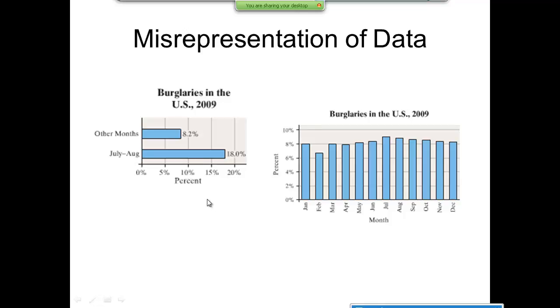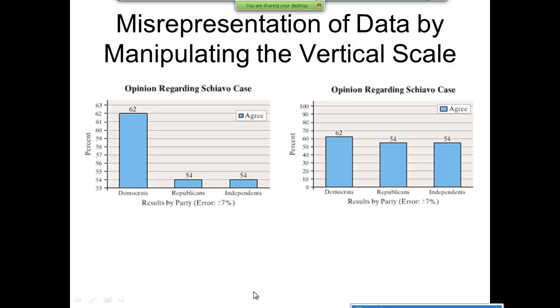On the left-hand side, this is an opinion regarding the Terry Schiavo case. You see Democrats 62%, Republicans 54%, and Independents 54%. It looks like the Democrats are way up there high, but actually the Republicans and Independents are down there at 54%. This is oftentimes the way you see it represented—they'll go with the lowest amount.